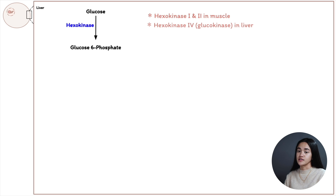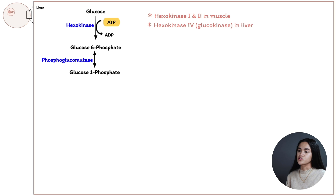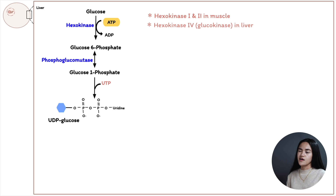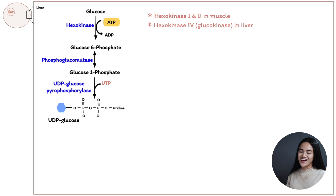This reaction requires ATP. From glucose-6-phosphate, it is then converted to glucose-1-phosphate via a phosphoglucomutase reaction, which is reversible. Before we can move on to synthesizing glycogen, we need to activate this glucose molecule by adding uridine triphosphate (UTP) to form the sugar nucleotide UDP-glucose. Glucose-1-phosphate is converted to UDP-glucose by UDP-glucose pyrophosphorylase.